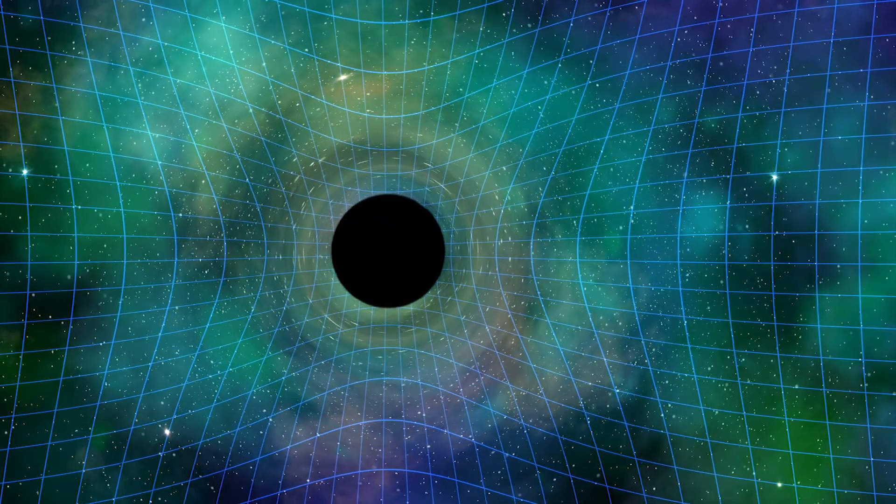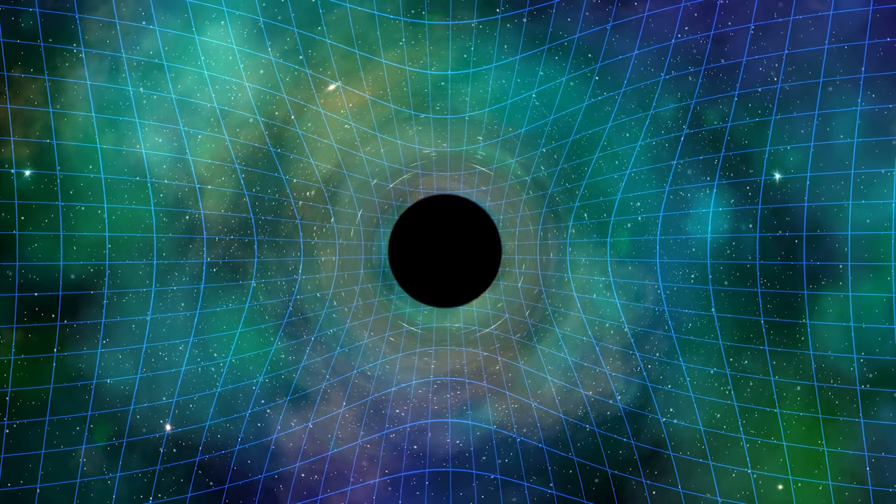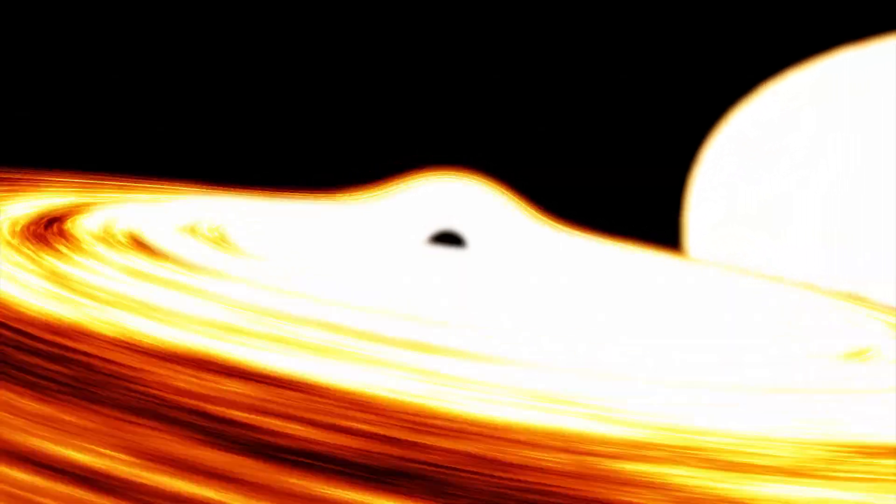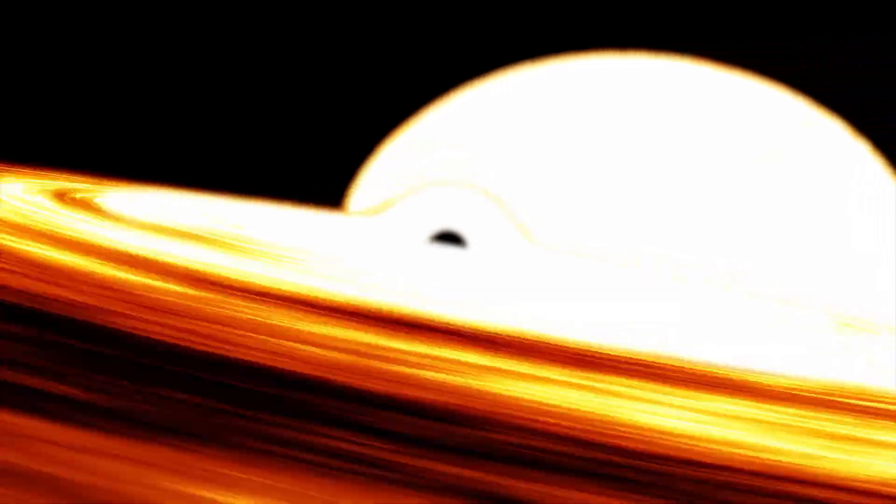As it spins, it warps space-time around it. The black hole is nine times more massive than our sun and is eating a star 70% the size of the sun.